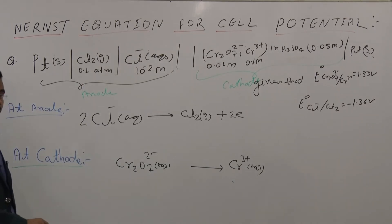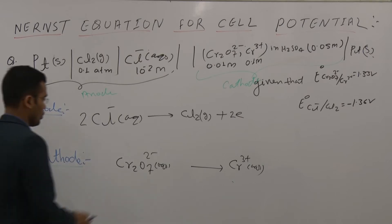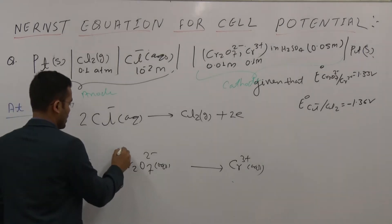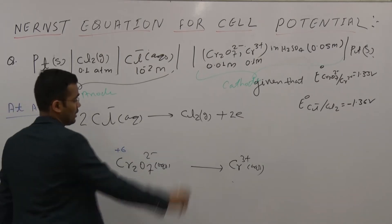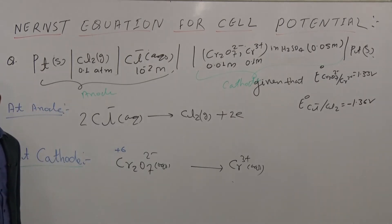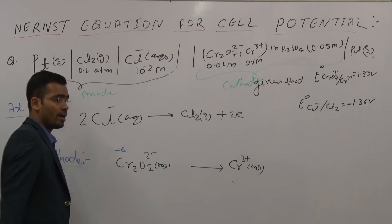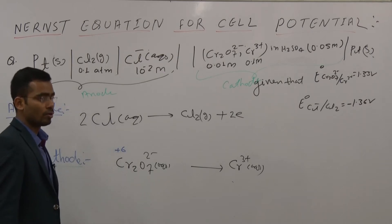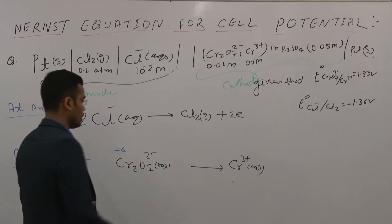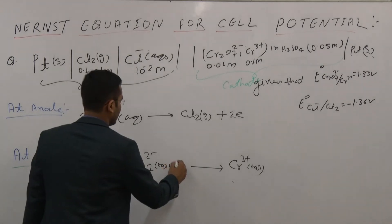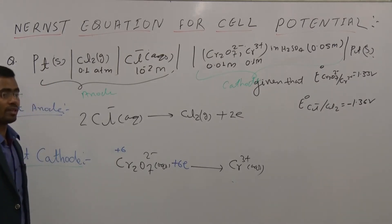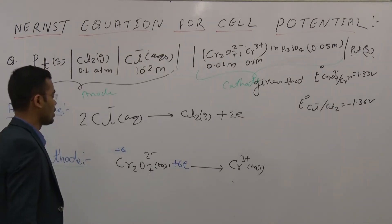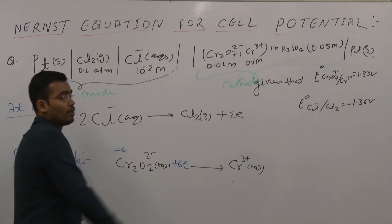First balance the electrons. Chromium has oxidation state +6, and going from +6 to +3 requires 3 electrons per atom. For two Cr atoms, 6 electrons are required. Therefore, you add 6 electrons to the left side because it is a reduction half-reaction.